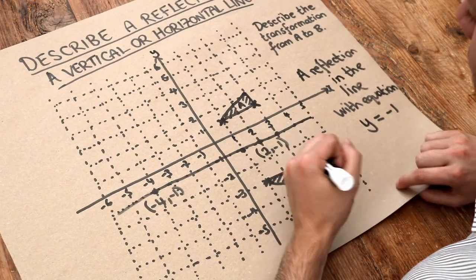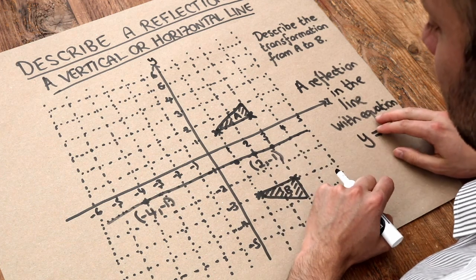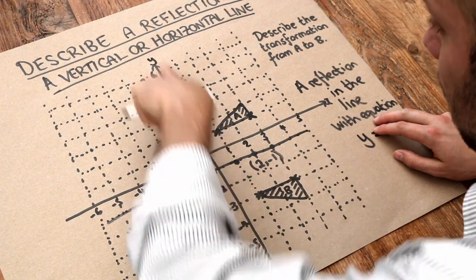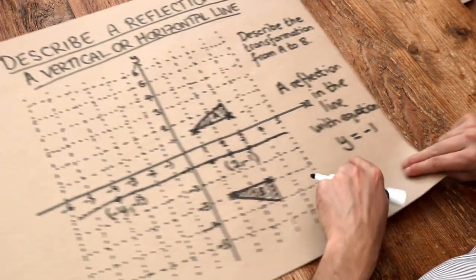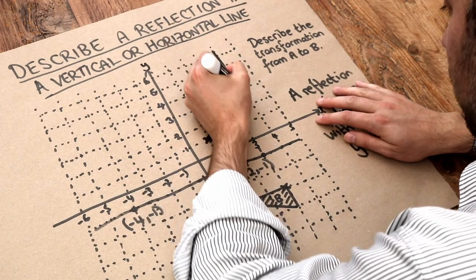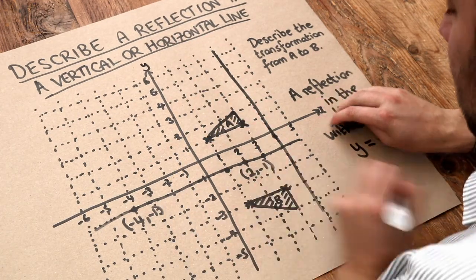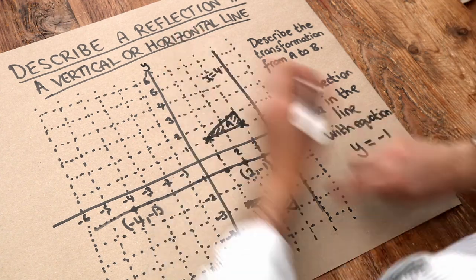The quick way of telling, if you have either a horizontal or vertical line, is where it cuts the axis. Can you see that this line cuts the y axis at minus one? Therefore, we know the equation is y equals minus one. Similarly, if we had the reflection line here, you can see it cuts the x axis at four, and so that equation would be x equals four.